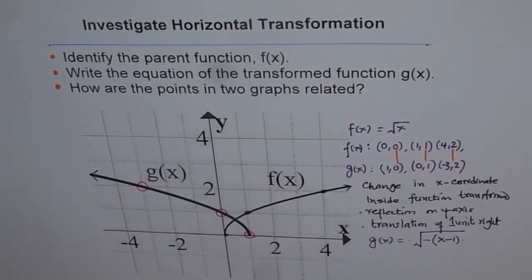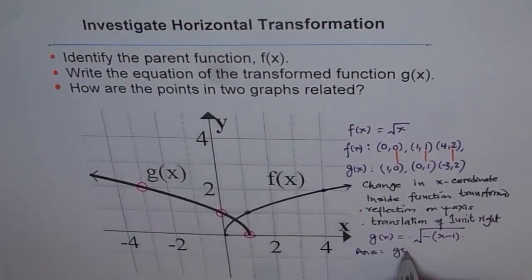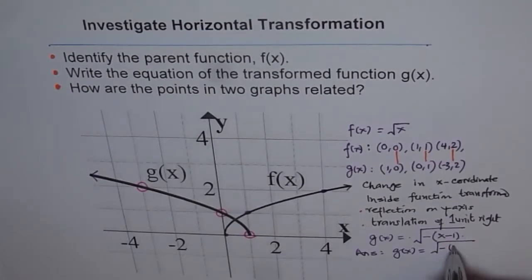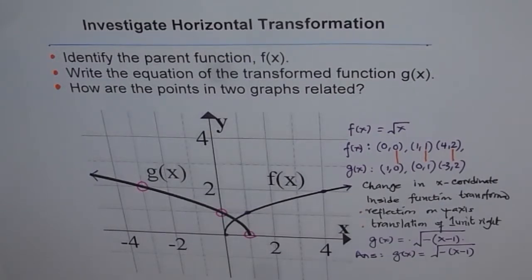Now, once you have checked your points with the equation and you are sure, write down your answer. So the answer is, the transformed function is g(x), which is square root of minus x minus 1. That is how we are going to answer these kinds of questions. I hope you understand and appreciate the method of doing it.